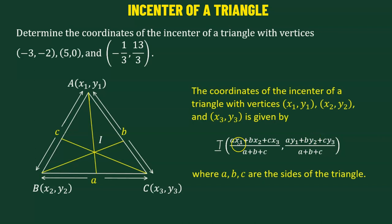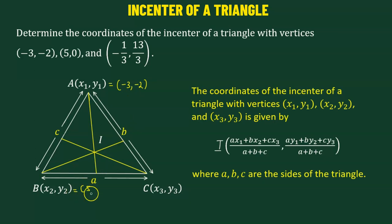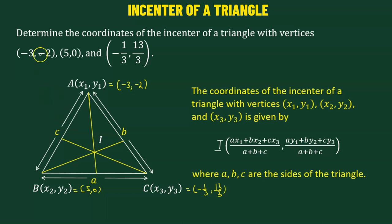Now let us begin. We have x1, y1; x2, y2; x3, y3 given to us. We consider x1, y1 to be equivalent to negative 3, negative 2. We consider x2, y2 to be equivalent to 5, 0, and x3, y3 to be negative 1 over 3, 13 over 3. Now that we have the coordinates of the vertices, we also need to find the lengths a, b, and c using the distance formula.